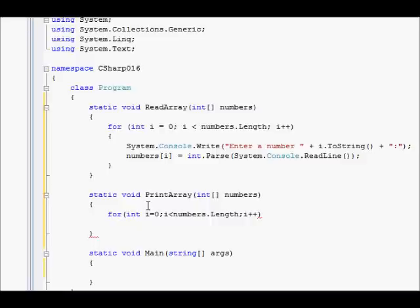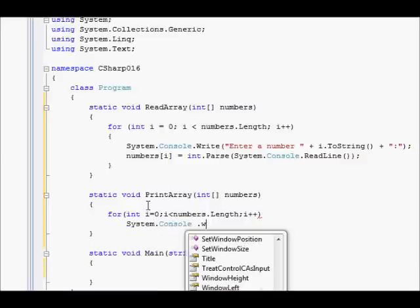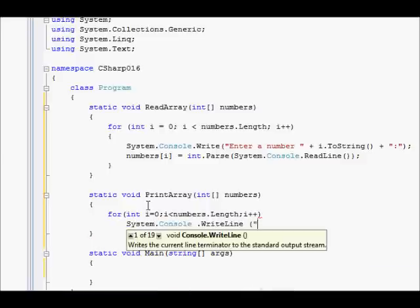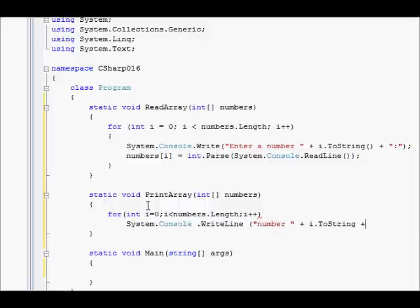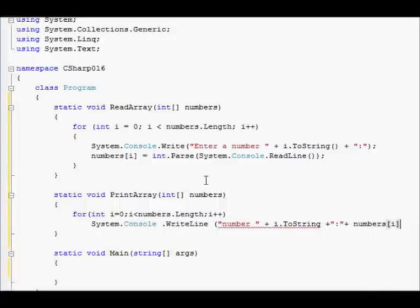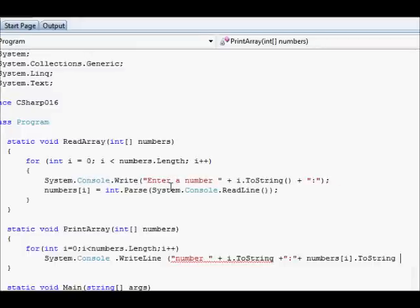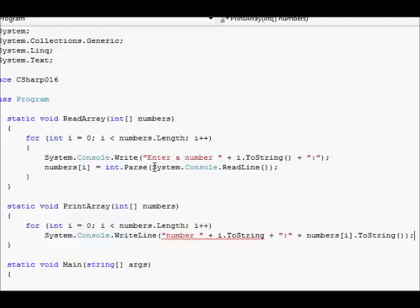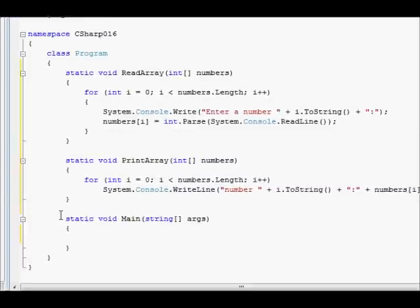So what are we going to do? We are going to say system console writeline number i dot to string followed by what? Numbers of i dot to string. This is the value here. That's wonderful. And semicolon. I forgot to put this one here. So this will loop and print all the elements.